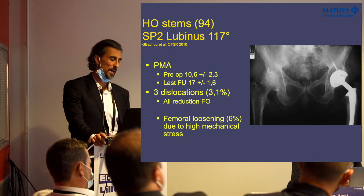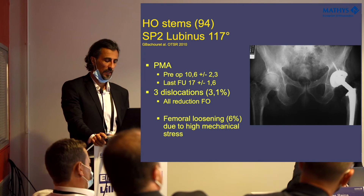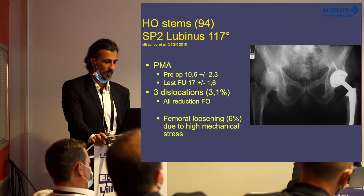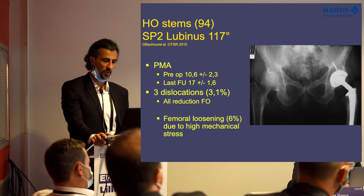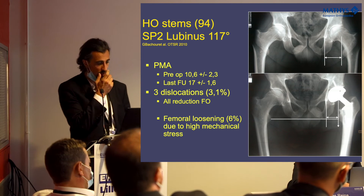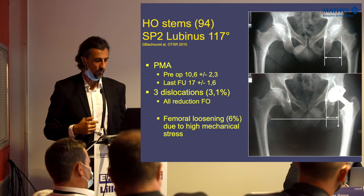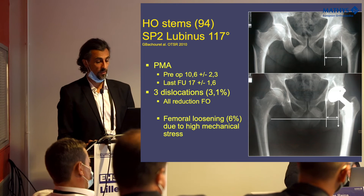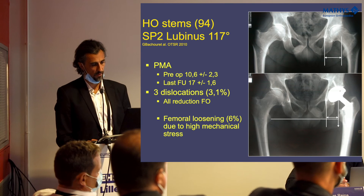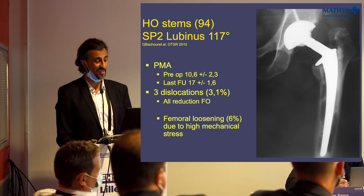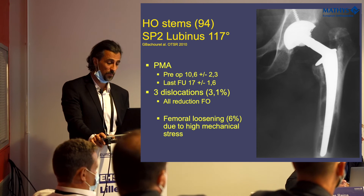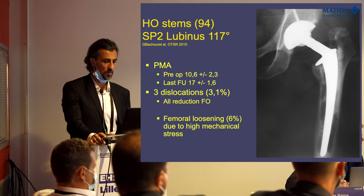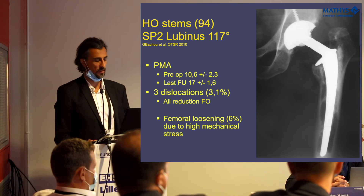In my institution, at the beginning of our experience with these types of cases, we used high-offset stems — the Lubinus SP to 170 degrees. For clinical scores there were no differences with other series, but we had a very high rate of dislocation using a posterior approach: three dislocations, meaning more than three percent — a very bad rate. In all these dislocation cases we noticed a reduction of femoral offset. Moreover, at five years of follow-up we had six percent femoral loosening due to high mechanical stress on the stem. Today we have stopped using this type of long-neck high-offset stem.